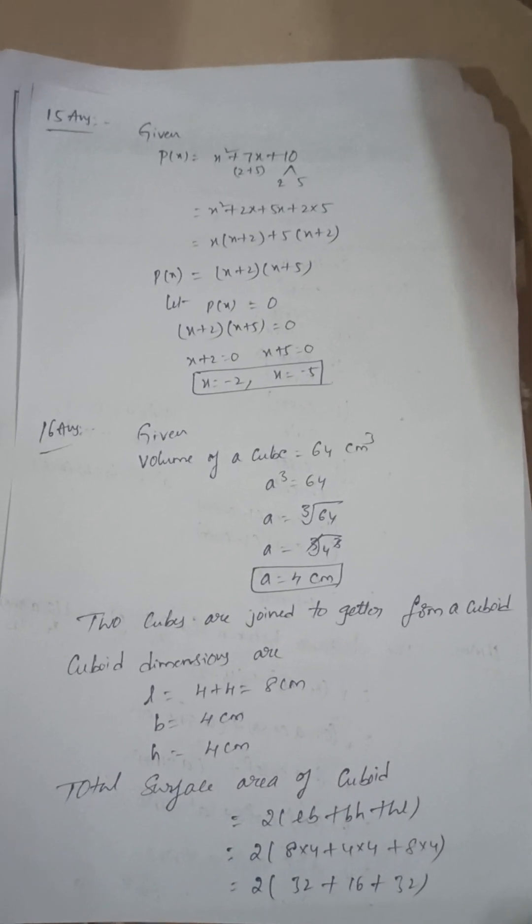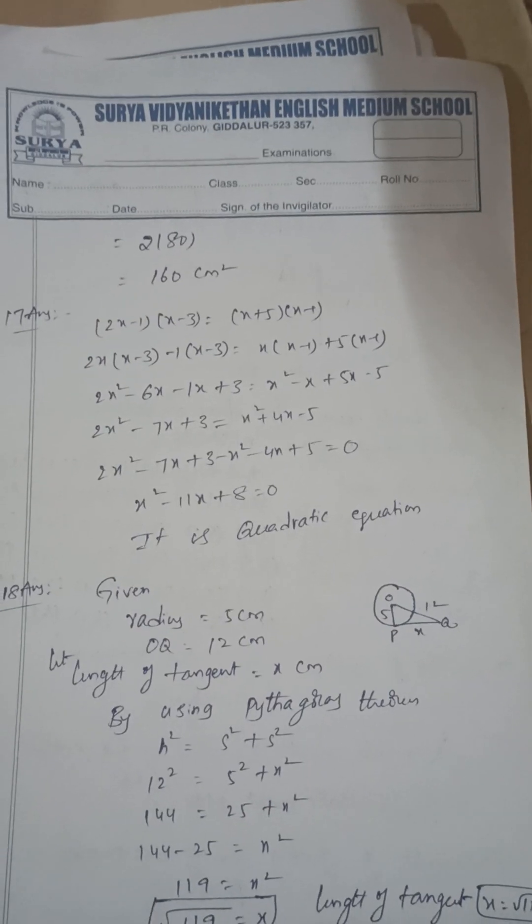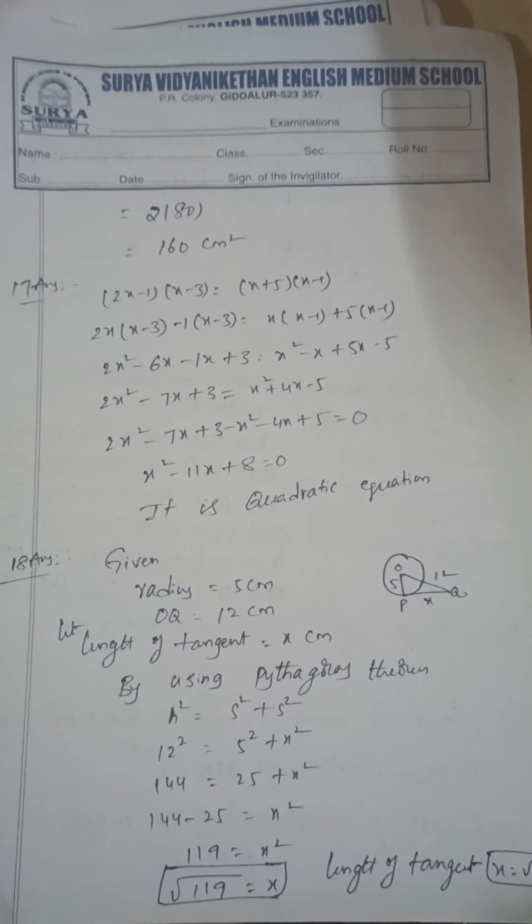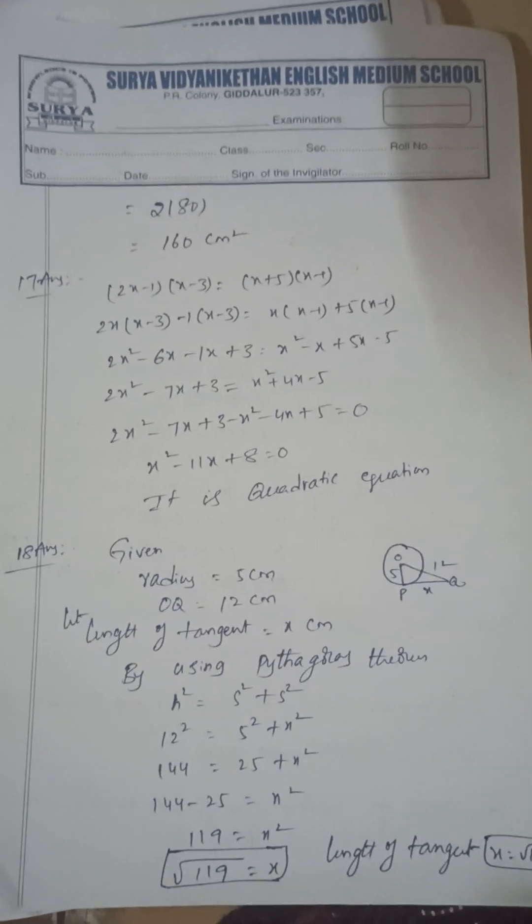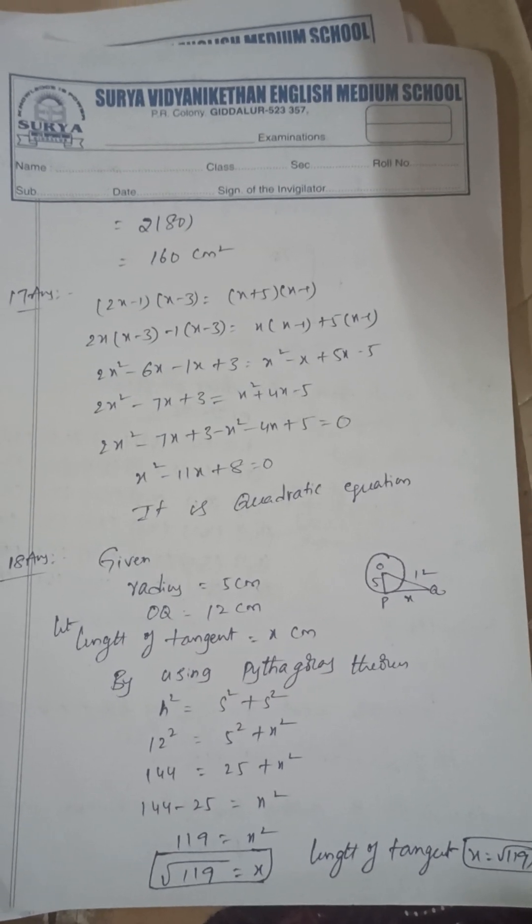Next, two cubes are joined together to form a cuboid. Then the total surface area of cuboid is 160 centimeter square. The volume of cube is 64, so side is equal to 4. Next, the given equation is a quadratic equation.